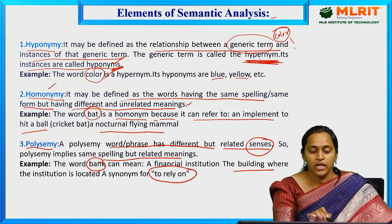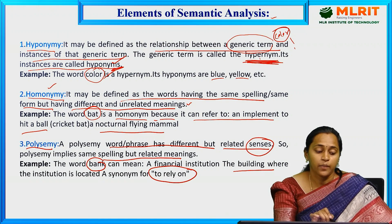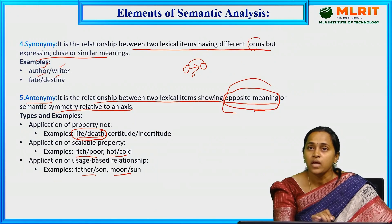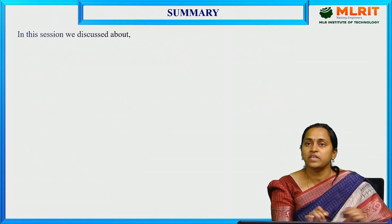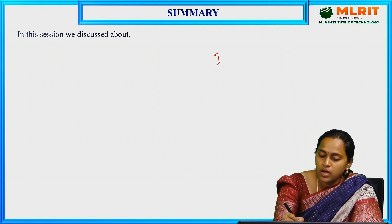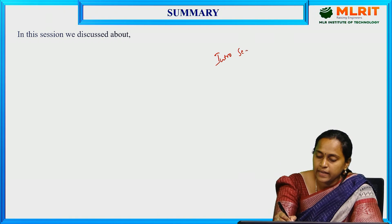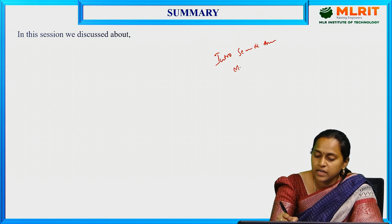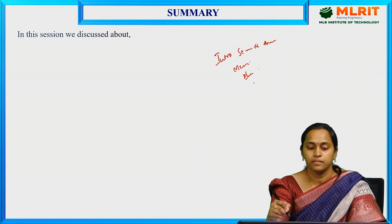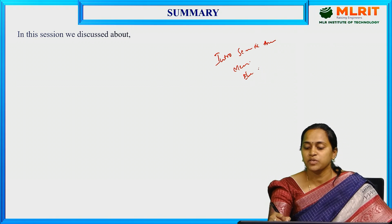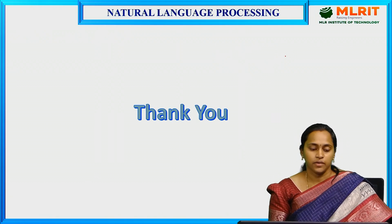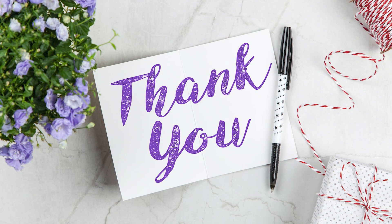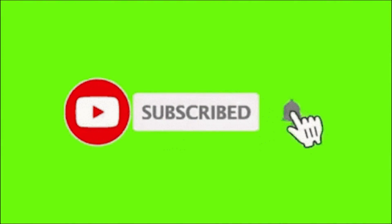This is all about the elements of semantic analysis — very important ones: hyponymy, homonymy, polysemy, synonymy, and antonymy. What we discussed in today's session is: introduction to semantic analysis, meaning and representation, elements of semantic analysis, and lexical semantics. Thank you.